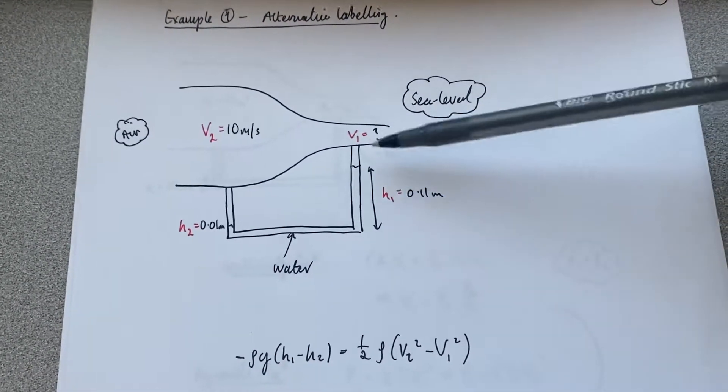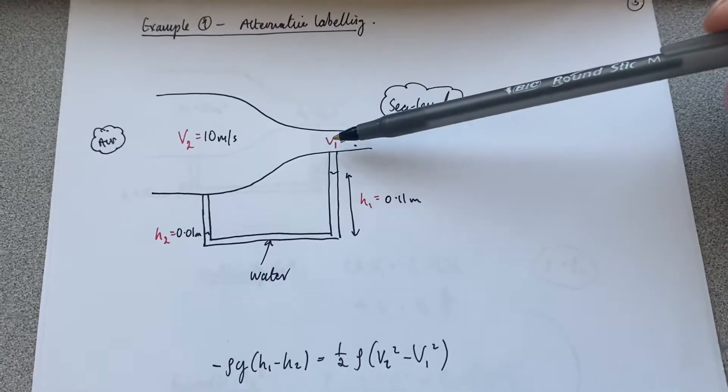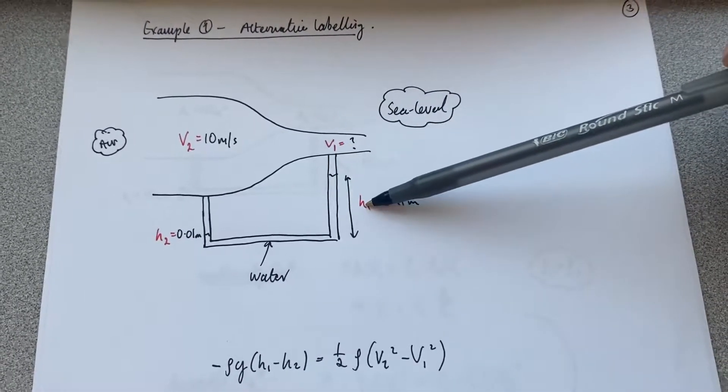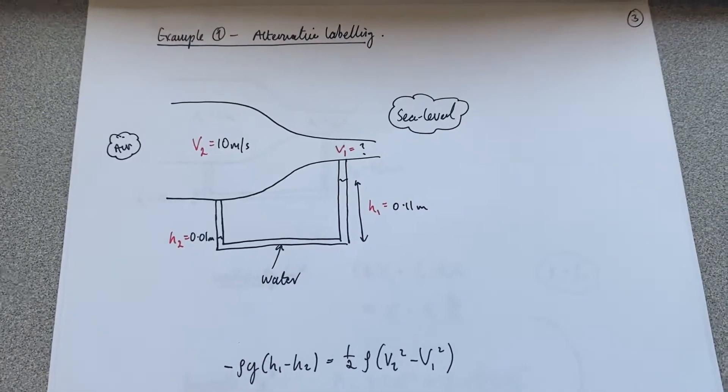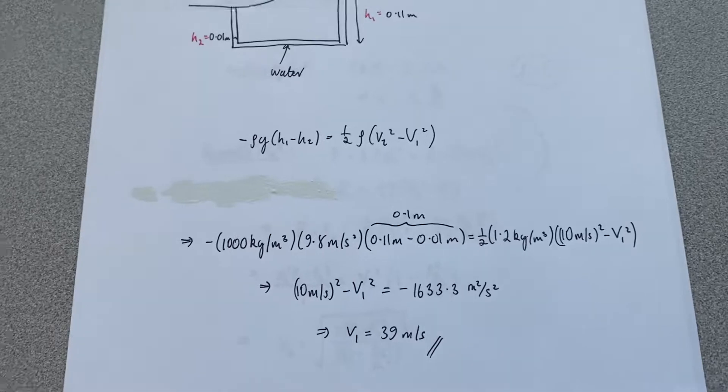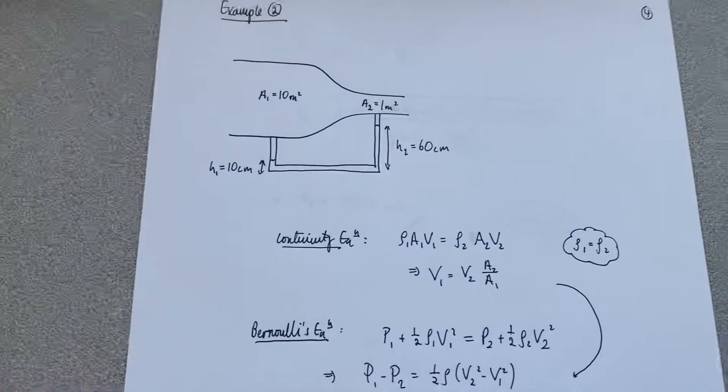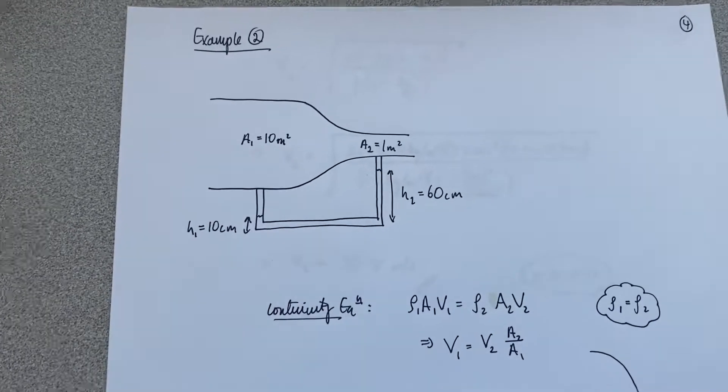So as long as v1 corresponds to the water... so as long as the flow speed on this side corresponds to the water level on this side and vice versa, and you label it correctly, there's really not much that can go wrong with that calculation.